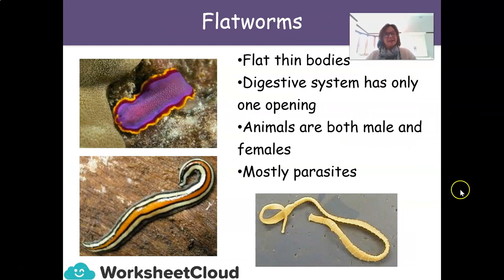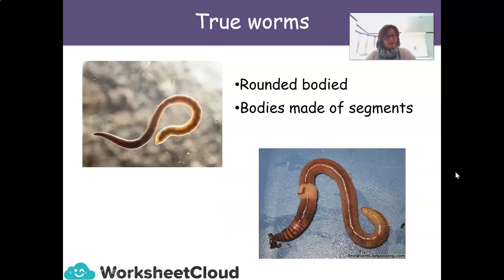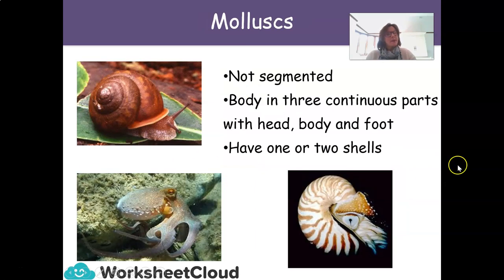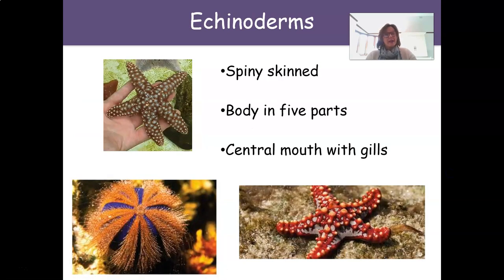Our flatworms, Grade 7s, have flat, thin bodies. Their digestive system has only one opening, the animals are both male and female, and they are mostly parasites. Our true worms, on the other hand, are rounded-bodied and their bodies are made of segments. Our mollusks are not segmented — their body is in three continuous parts: head, body, and foot, and they have one or two shells. Our echinoderms are spiny-skinned, their body is in five parts, and they have a central mouth with gills.